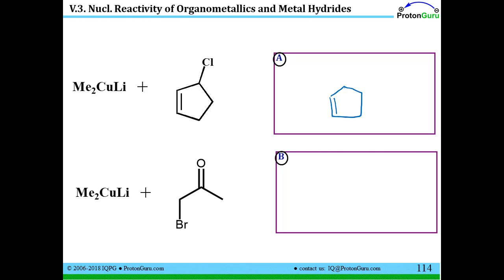The Gilman reagent can also replace a leaving group that is adjacent to an alkene. And we would expect the methyl group to go where that leaving group is. What if we consider one specific stereoisomer? Well, the Gilman reagent does the substitution with stereoretention, not what the SN2 reaction does. We'd get the same configuration there.